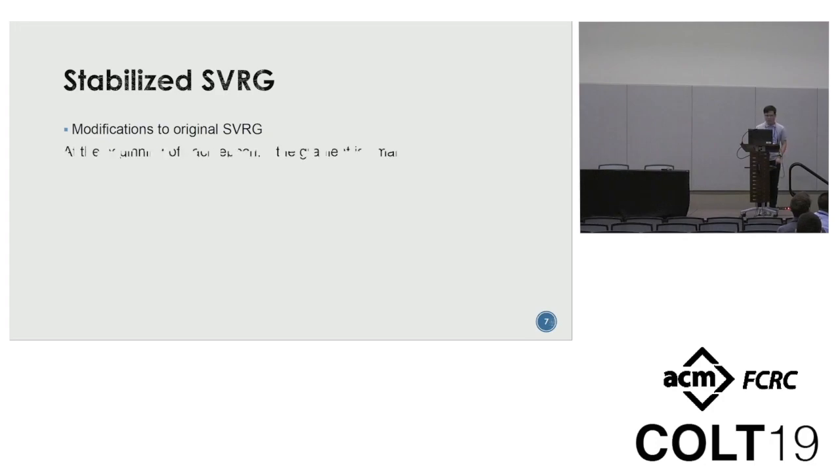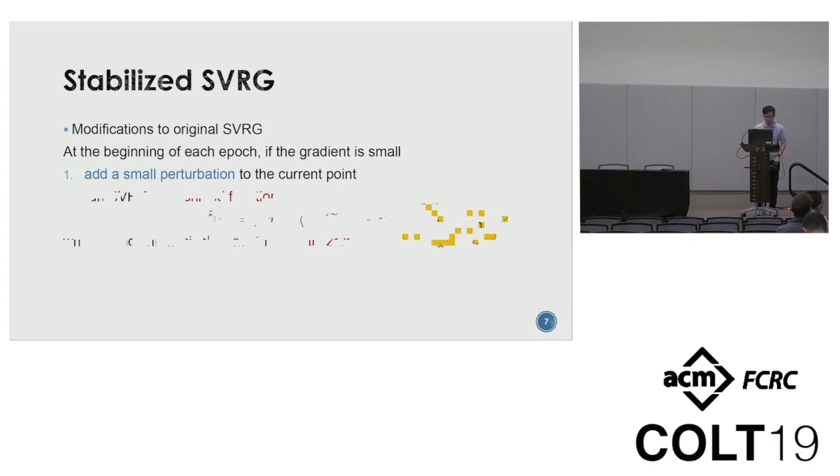What's our algorithm? We need some modest modifications to the original SVRG. At the beginning of each epoch, if the gradient is small, we add a small perturbation to the current point. Because if we are exactly at a saddle point, the gradient is zero. If there is no perturbation, we will get stuck at the saddle point. We also run SVRG on a shifted function. We subtract a linear term from the original function, such that the shifted function has exactly zero gradient at the initial point x_θ. This modification is called stabilization. The intuition behind this will be explained later.